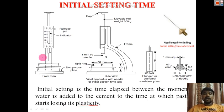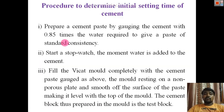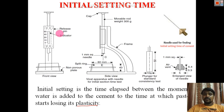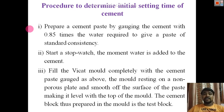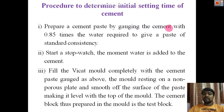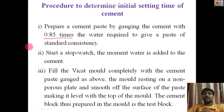The procedure to determine initial setting time uses the same Vicat apparatus but with the initial setting time needle. Prepare a cement paste by gauging the cement with 0.85 times the water required to give a paste of standard consistency — this is a very important point. The normal consistency value you calculated earlier must be used here.